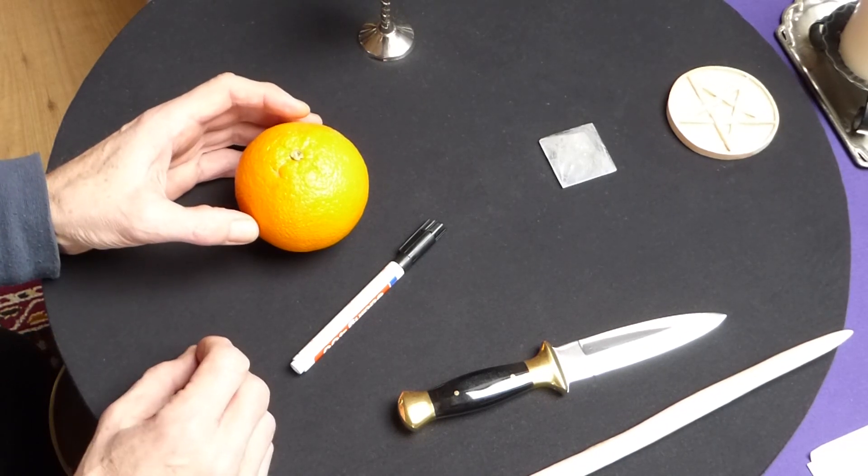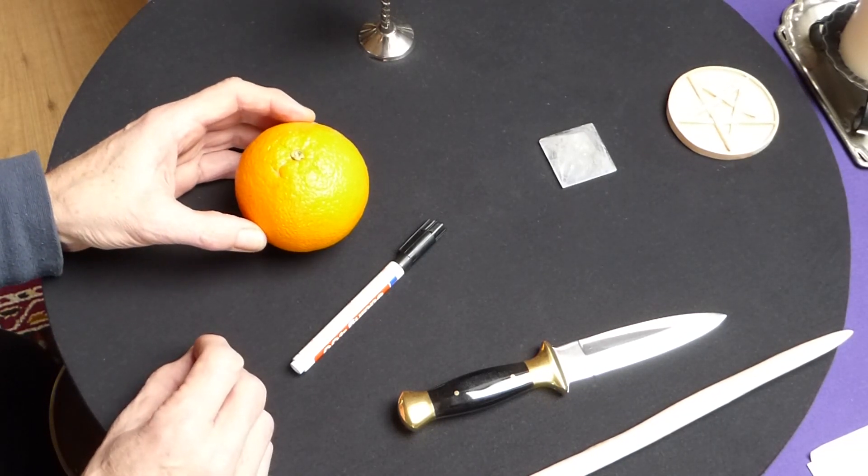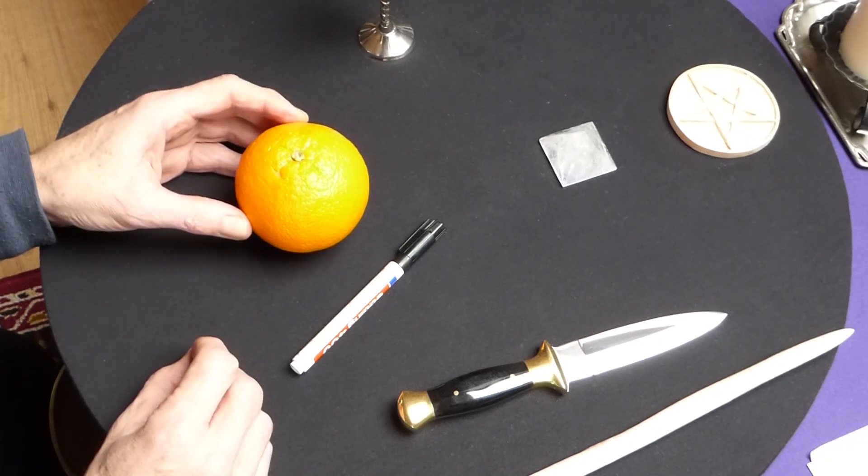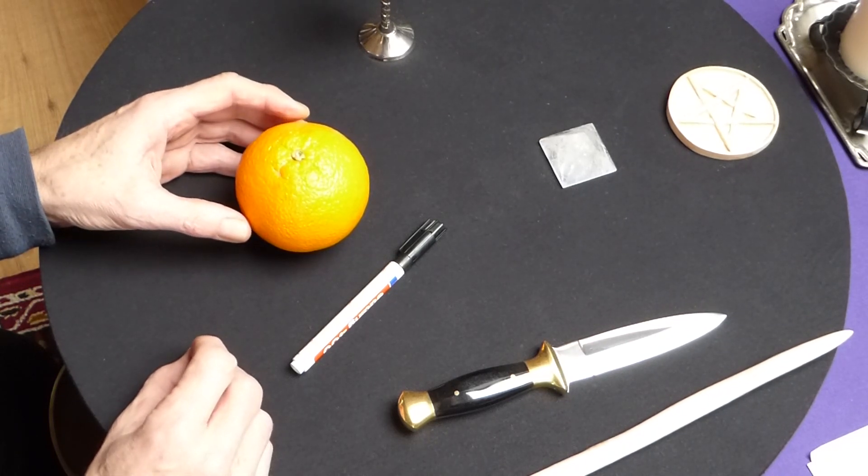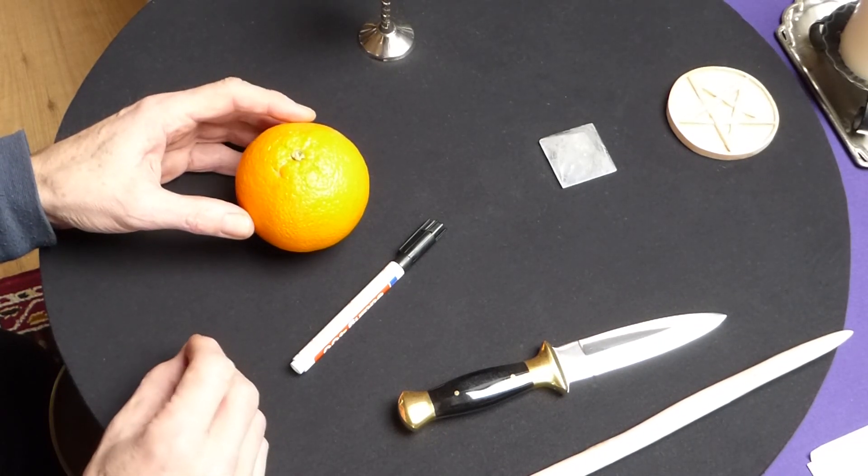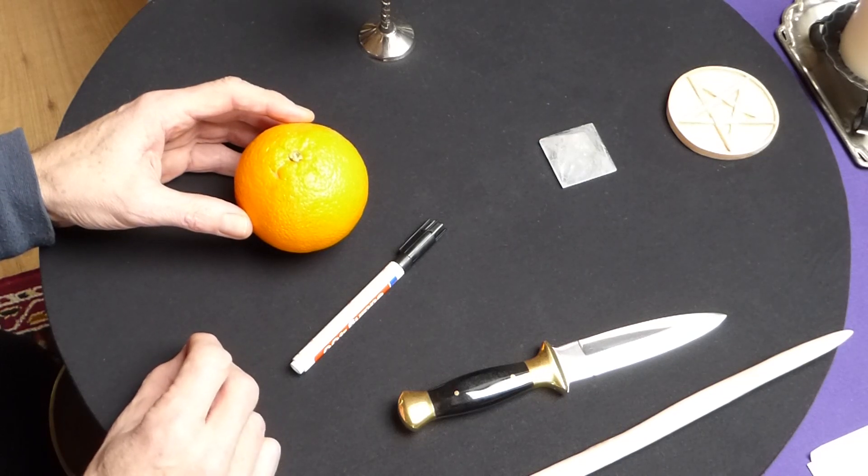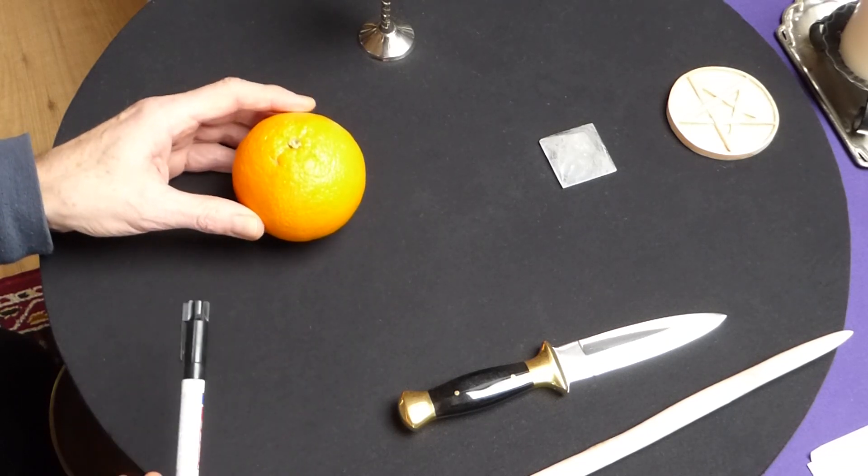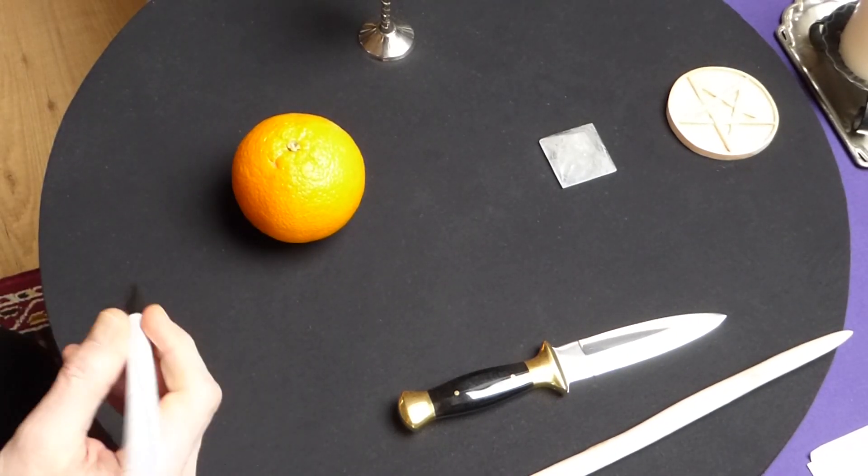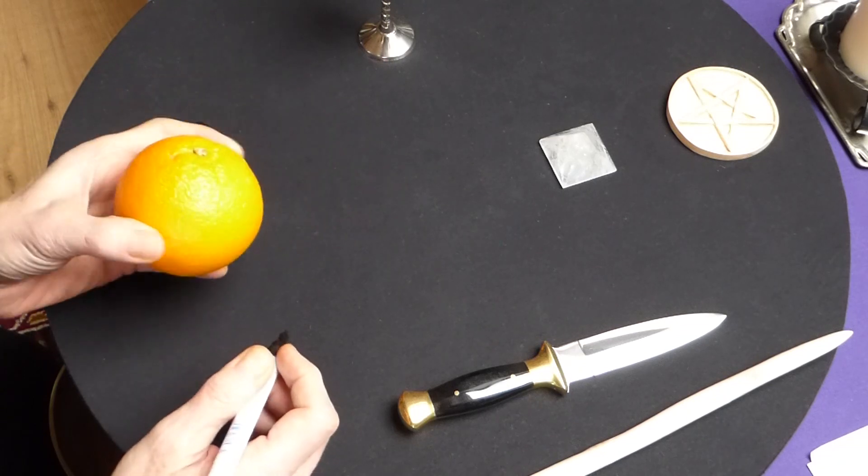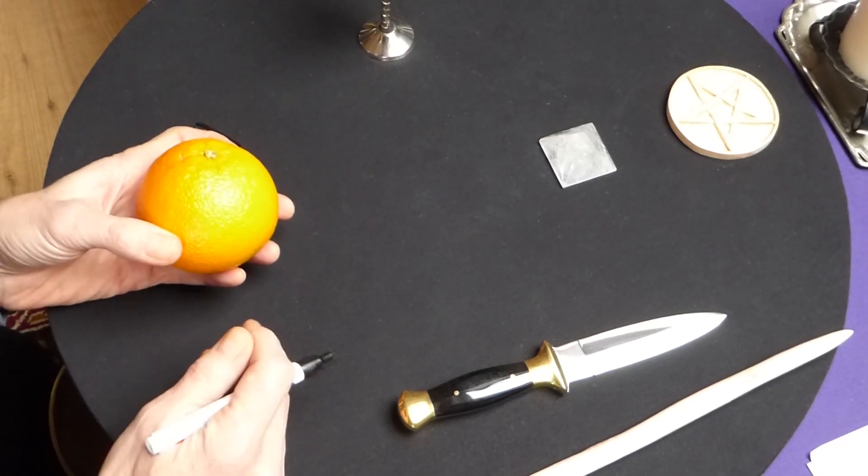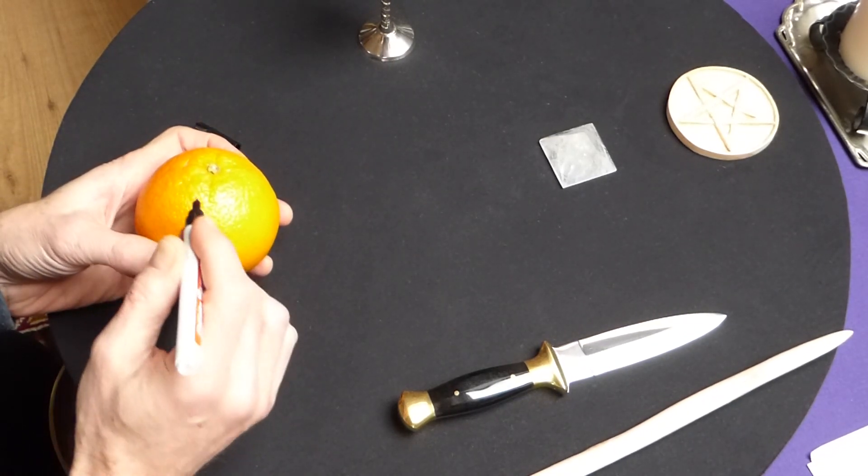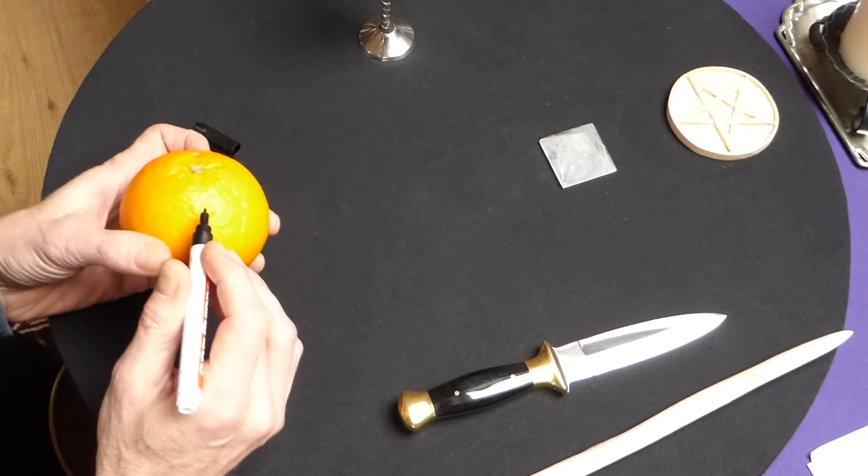First of all, you visualize your target. You think of your target, you visualize how you are together, how you are loving each other, kissing each other. Then you take your pen and your desires, you write onto the orange like a spiral.